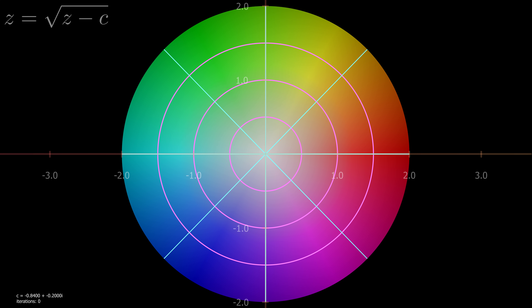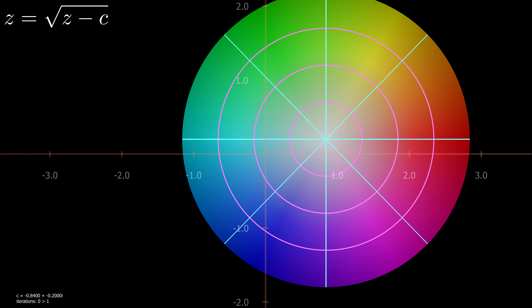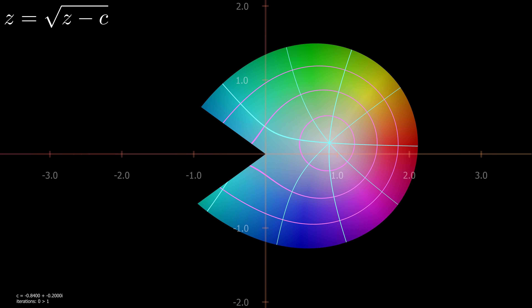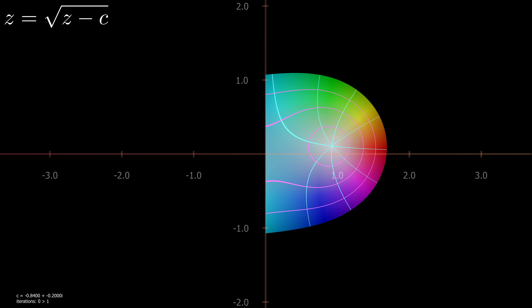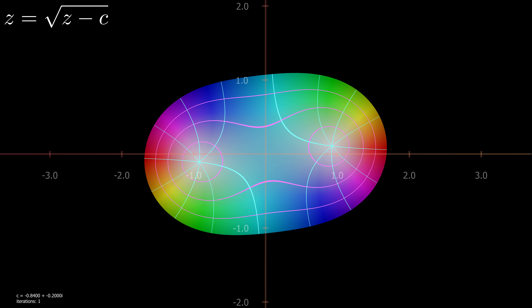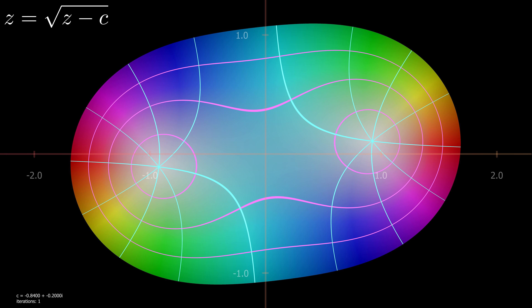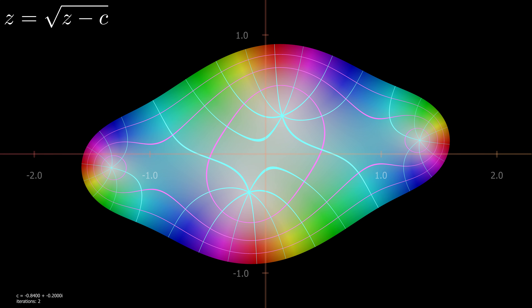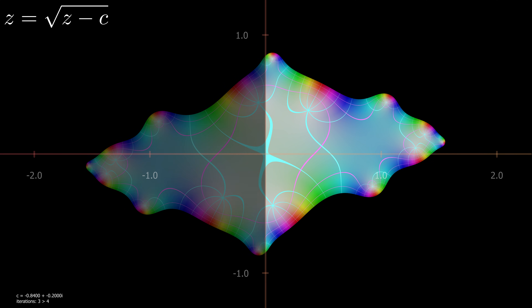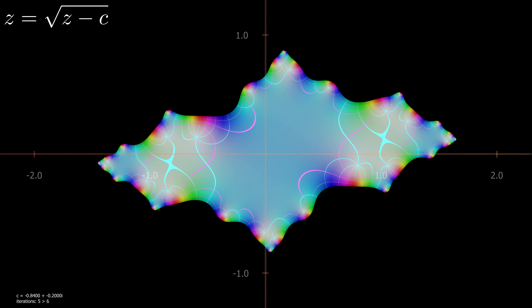Now back to our equation. Our equation can be broken into two steps. Z minus c shifts the image by c — every point in the image is now c units from where it began. As the second step we apply the square root function. If I repeat this process again we start to get new and interesting shapes forming. It is only these two actions — a shift and a square root — that are needed to form complex Julia set shapes. You will notice that the square root function always makes a rotationally symmetrical image. That is why the Julia sets are always rotationally symmetrical.